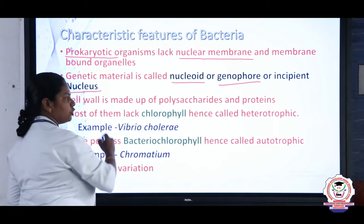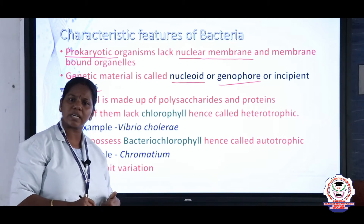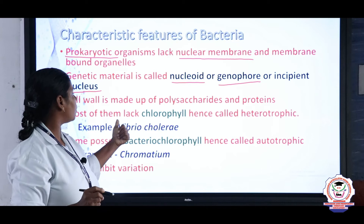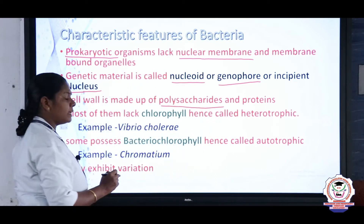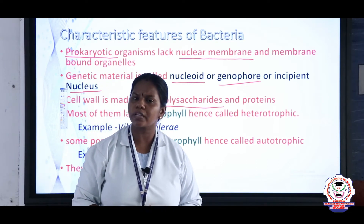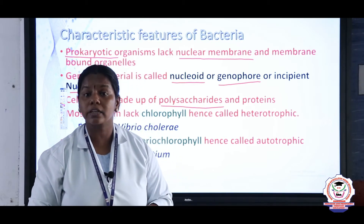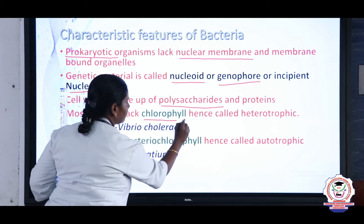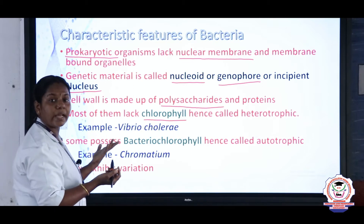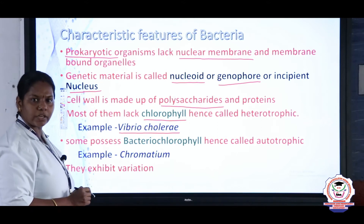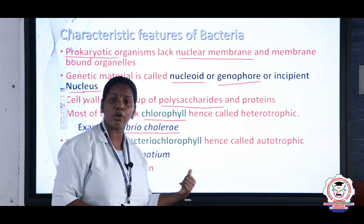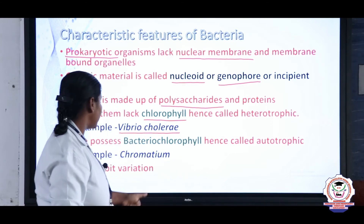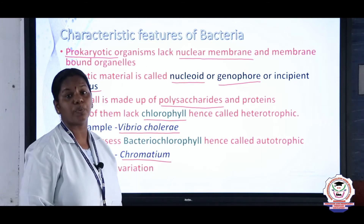The bacterial cell has three layers: the outermost capsule, the cell wall, and the plasma membrane. The cell wall is made up of polysaccharides and proteins. Based on their pigment, some bacteria are autotrophic — able to synthesize their own food — while others are heterotrophic, depending on other organisms. For example, Vibrio cholerae is heterotrophic, while Chromatium possesses bacteriochlorophyll and is autotrophic.